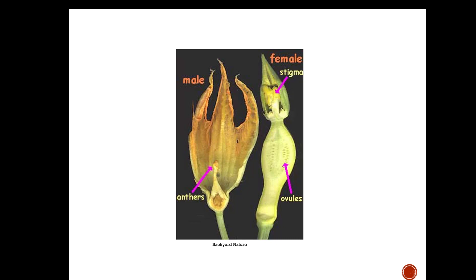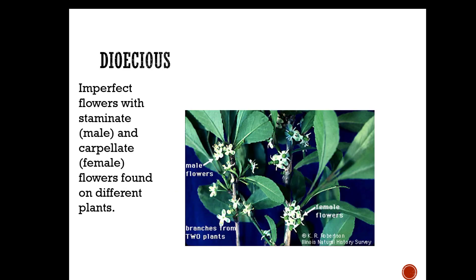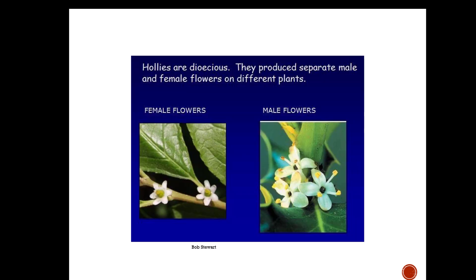Dioecious plants have the staminate flowers on one plant and the carpellate or pistillate flowers on another plant. Hollies are dioecious — you have separate plants for the female and the male. If you were confused about which one you had, once it flowered you could check: on the left you can see the pistil in the center of that flower, and on the right is the male flower — all it has is the stamens, with no pistil.